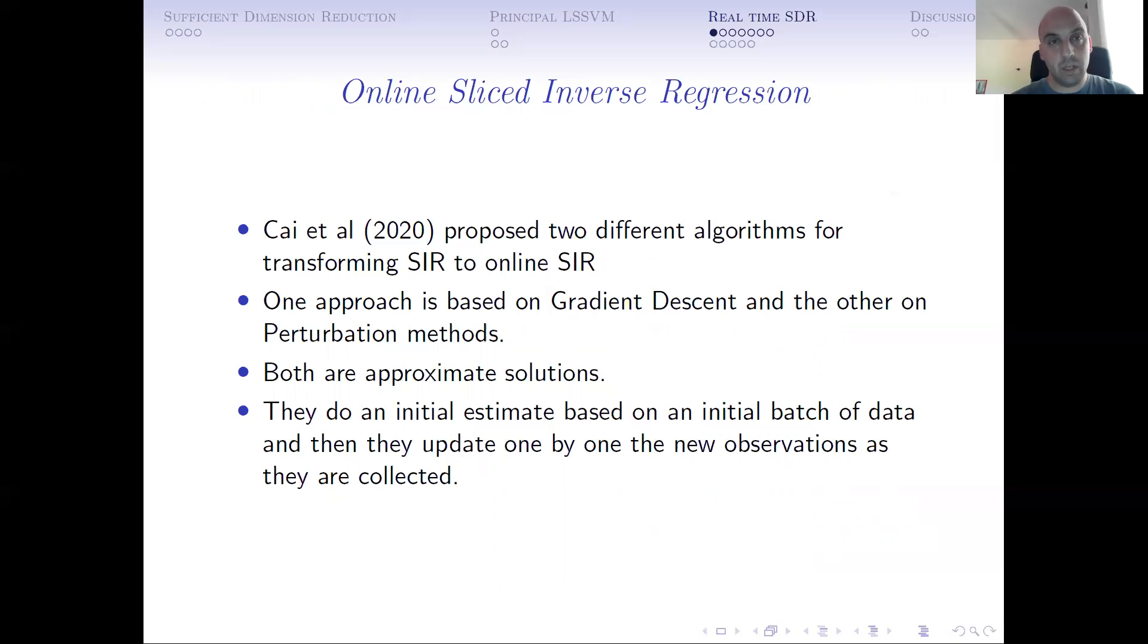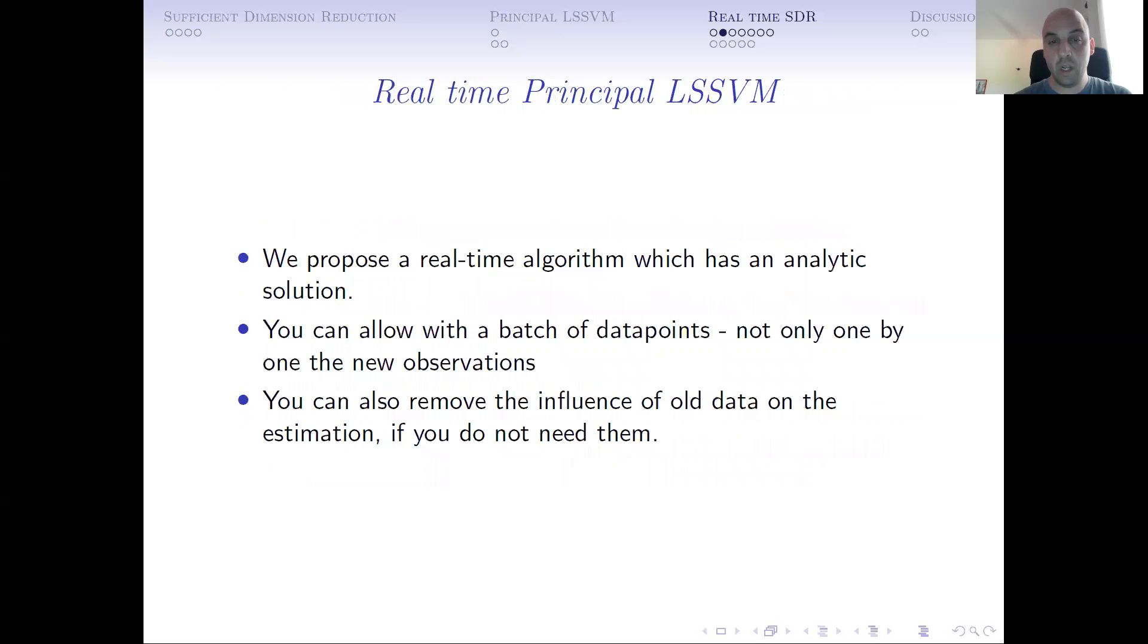Now, the online SDR or real-time sufficient dimensional reduction—it's a very recent topic. People have some interest very recently. Kara in 2020, in the Journal of Machine Learning Research, showed two different algorithms how to transform sliced inverse regression to online sliced inverse regression. One approach is gradient descent and the other is the perturbation methods. Both are approximating solutions. After doing an initial estimate on the data that is available, they do estimates of new data that come in one by one for each observation.